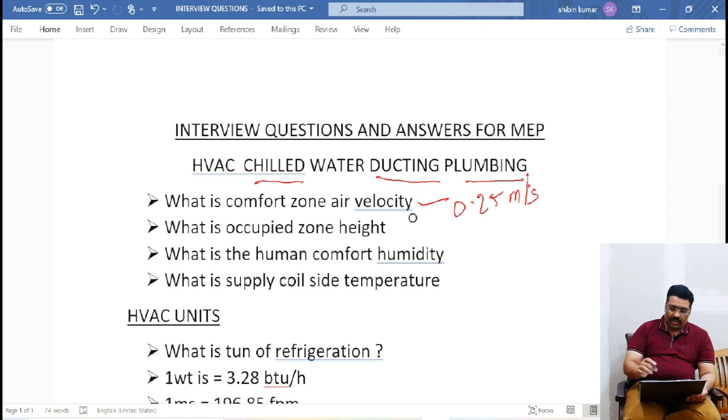So what is that? 0.25 meter per second. This is comfort zone air velocity. And the next question is: what is occupied zone? Occupied zone means, for example, we are designing one room. The air velocity, air flow and temperature we are considering - not in the entire room.